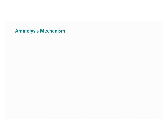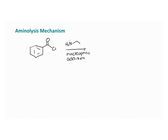Let's look at the mechanism. We're going to start with our acyl chloride, and we're going to first undergo a nucleophilic addition, just like we saw previously. Remember, you need to be looking for patterns. One equivalent of amine is required as a nucleophile, and it's going to come in and attack that carbonyl carbon, bumping those electrons up onto the oxygen.